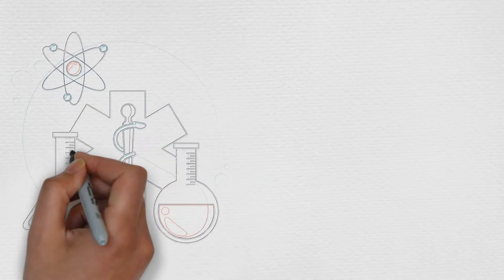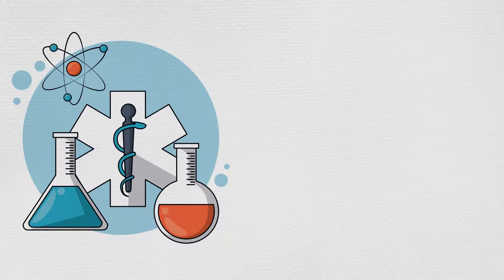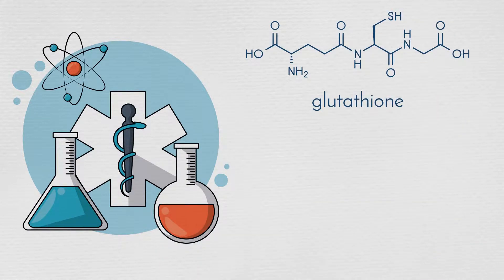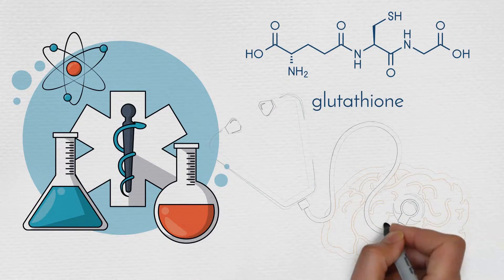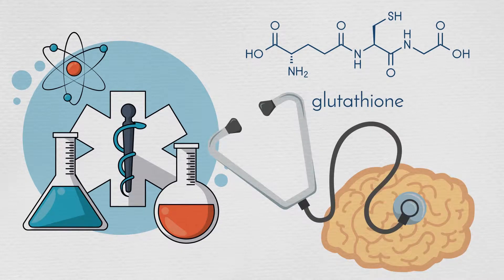The researchers concluded that the study provides compelling evidence that glutathione levels in specific brain regions are relevant markers for mild cognitive impairment and Alzheimer's disease.